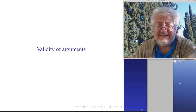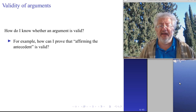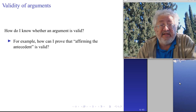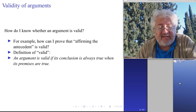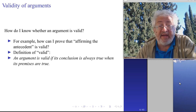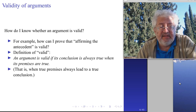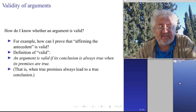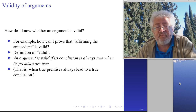First, let's see what validity is. What does it mean for an argument to be valid? I said that affirming the antecedent is valid while affirming the consequent is not, but why? Here is the definition: an argument is valid if the conclusion is always true when the premises of the argument are true - in other words, when true premises always lead to a true conclusion. If an argument can have true premises and a false conclusion, then it is not valid.